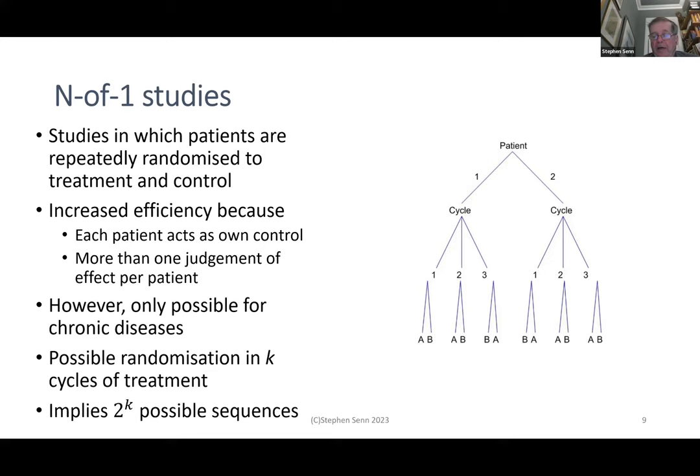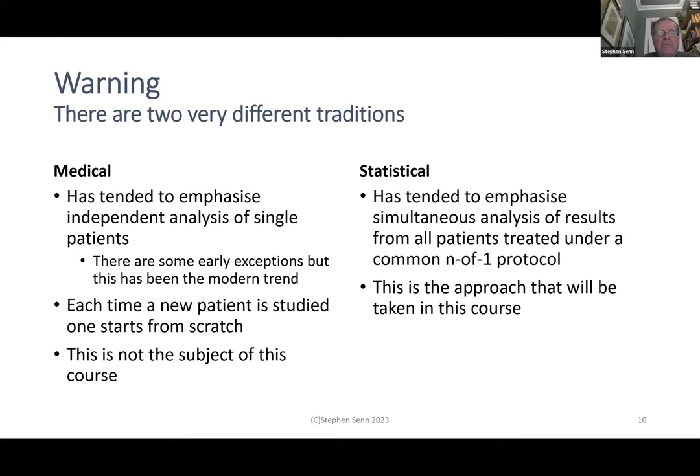One of the disadvantages of end-of-one trials is they're only possible for chronic diseases. We're not in the resurrection business, so we can't bring people back to life if they died under a particular treatment. Essentially we need reversible treatment effects, which makes it only possible for chronic diseases. With K cycles of treatments, there are 2^K possible sequences. There are two very different traditions: the medical tradition has tended to emphasize independent analysis of single patients.